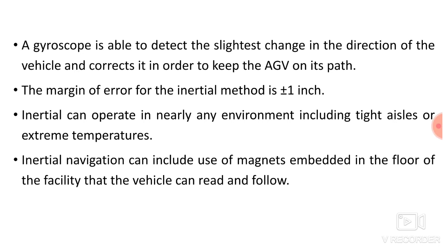The margin of error for the inertial method is plus or minus one inch. Inertial navigation can operate in nearly any environment, including tight cells or extreme temperatures. Inertial navigation can also include the use of magnets embedded in the floor of the facility that the vehicle can read and follow, and the gyroscope will detect the slightest change and turn the AGV accordingly.